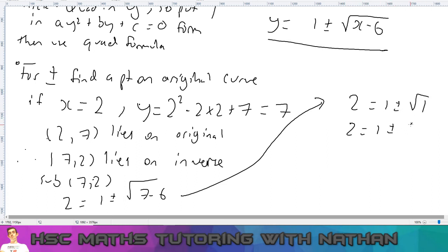2 equals 1 plus or minus 1. So now you just pick the plus or minus that makes it true, and therefore it has to be the plus, right? Because 1 plus 1 is 2, 1 minus 1 is 0. So therefore the inverse equation is 1 plus square root x minus 6.